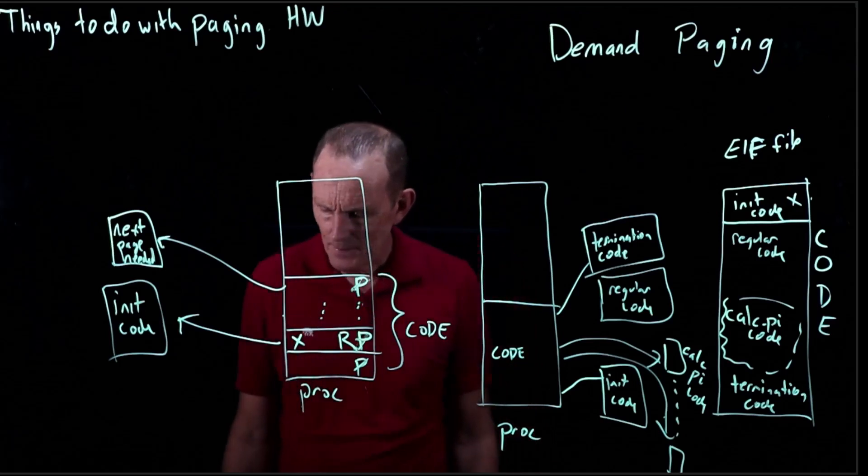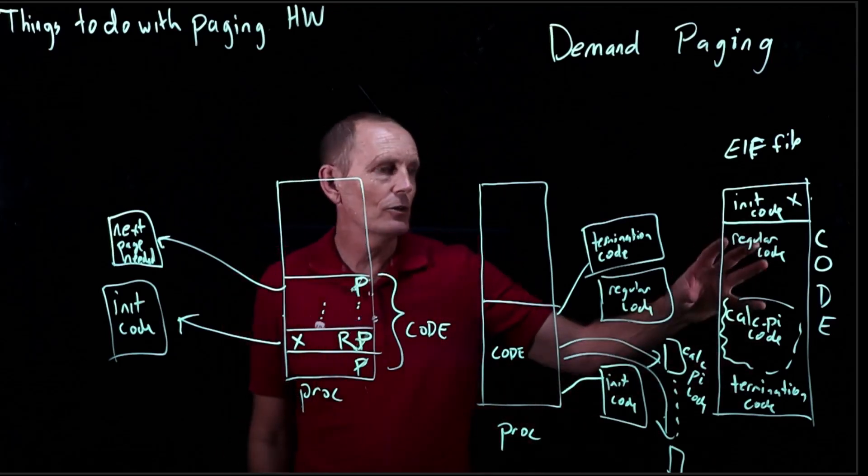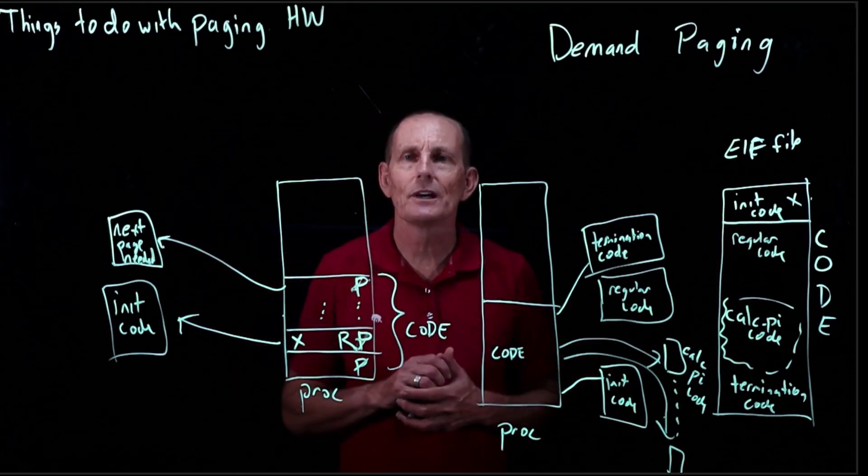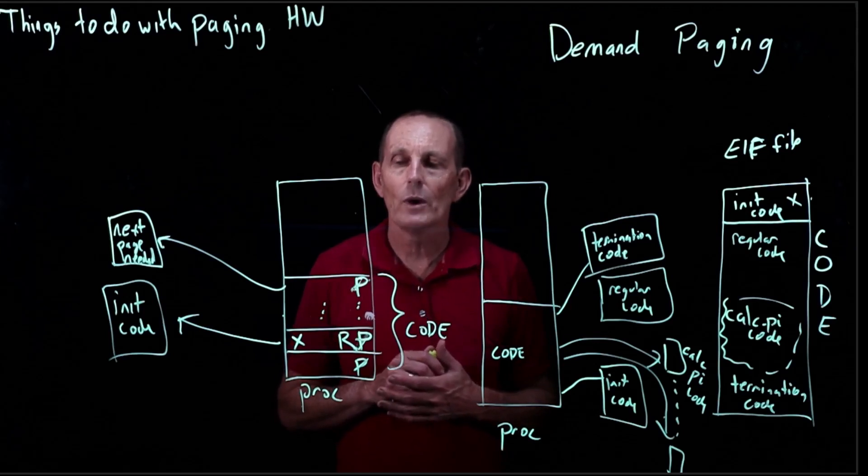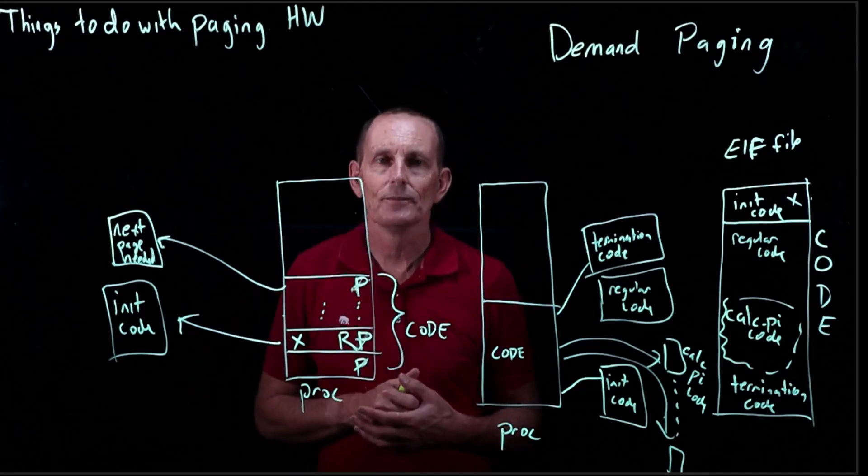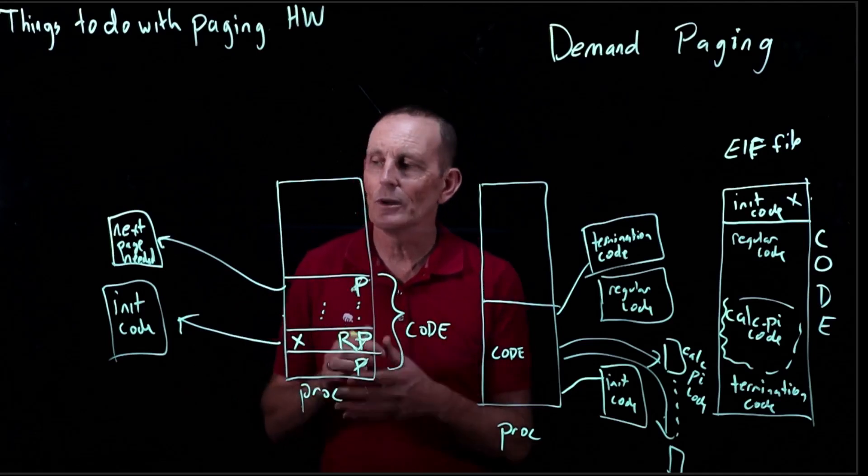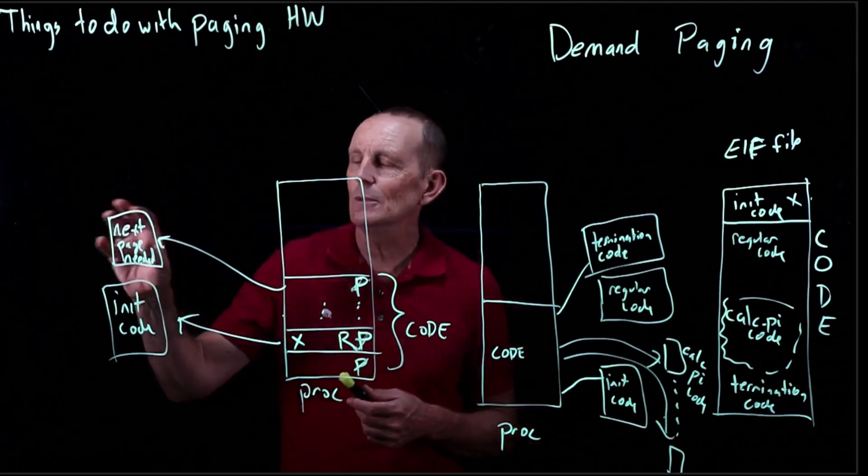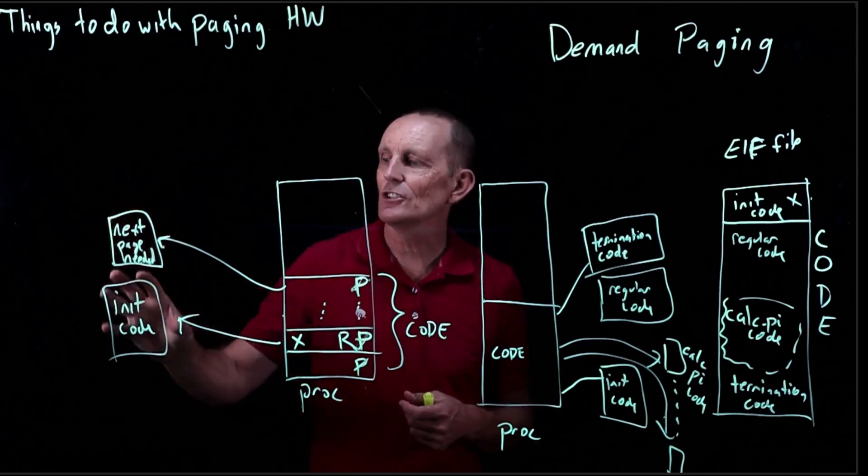The other question is, what happens if your code is larger than the physical memory you have? Well, that gets into this idea of virtual memory, where we might have more address space than we have pages. And the idea is just something like this: the idea would be, well, you've got this code, why don't we just keep track of which pages have been used and which not been used?